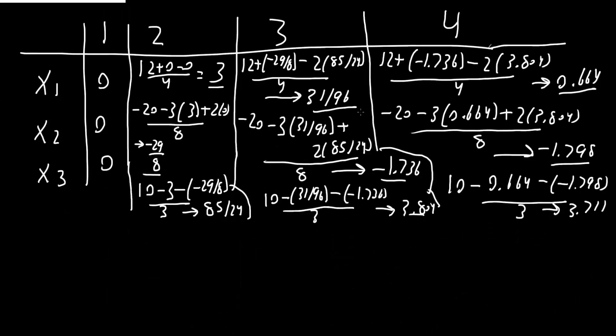Now, a quick explanation. As we go on with each iteration, the answer gets more and more accurate. So x1, we're saying it's going to be 0.664. x2, we're saying it's going to be negative 1.798, and x3, we're saying it's going to be 3.711. Now, we can check this. Is this a good approximation? And so I will type this problem in my calculator.